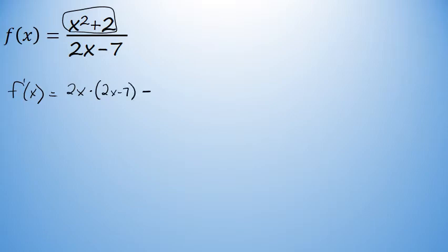Minus the original numerator unchanged, x squared plus 2, times the derivative of the denominator, and the derivative of 2x minus 7 is just 2. And this is all over the original denominator, 2x minus 7, squared.